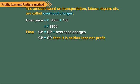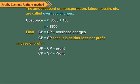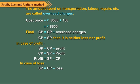We use the following relationships to find CP, SP, profit, or loss. In case of loss: SP is equal to CP minus loss; CP is equal to SP plus loss; and loss is equal to CP minus SP.